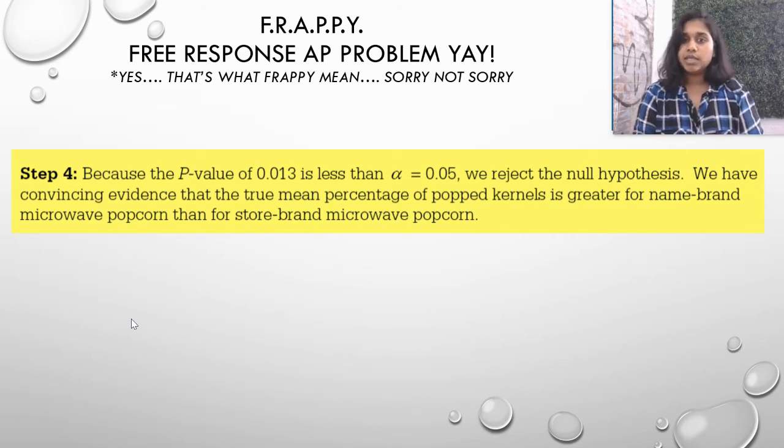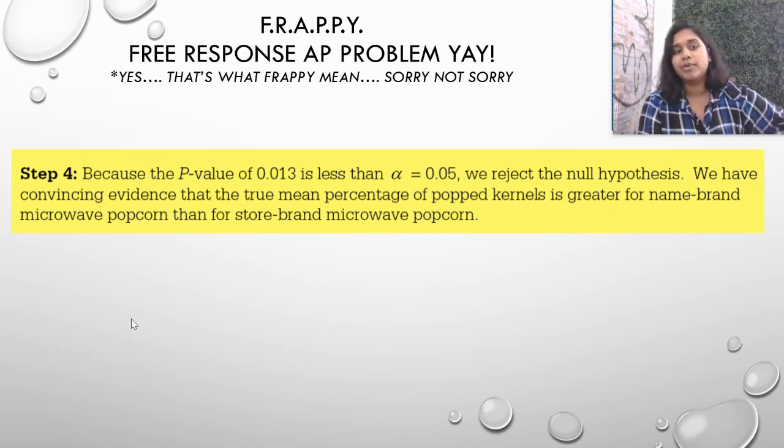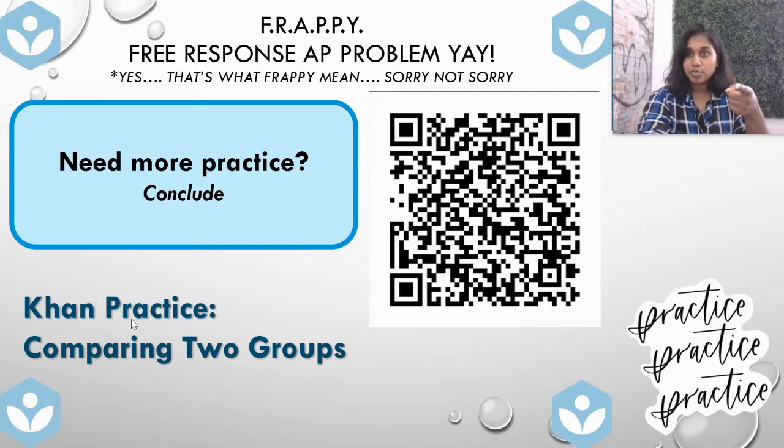Because the p-value is less than, we reject the null, which means that we're agreeing with the alternate hypothesis. We have convincing evidence that the true mean percent of popped kernels is greater for name-brand microwave than for store-brand microwave popcorn. Ta-da! That's it. If you're struggling with conclusion sentences, here's your practice.